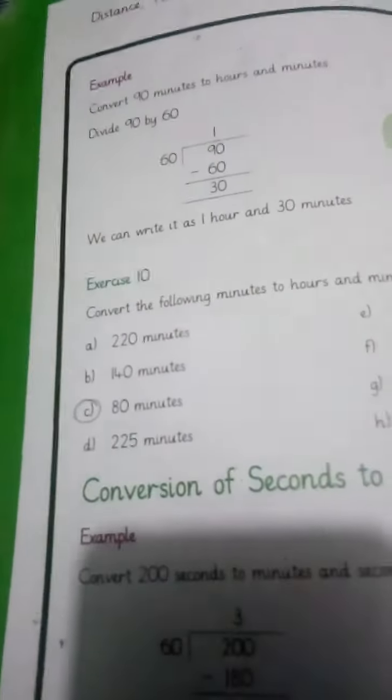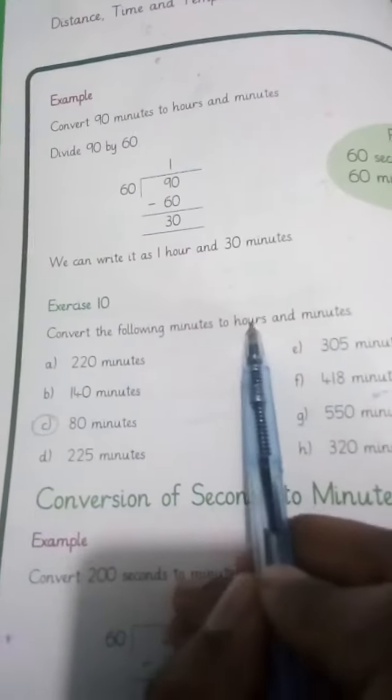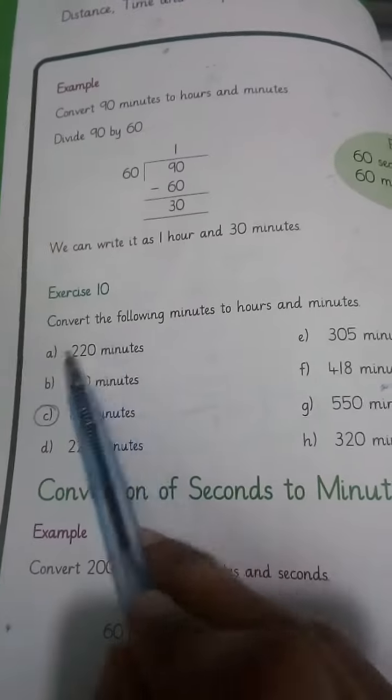Students, today we will do Exercise 10 of Unit 5 on page number 74. Convert the following minutes into hours and minutes. We have to change these minutes into hours and minutes. Let's see how we can change this. As you know, in one hour there are 60 minutes.